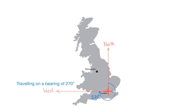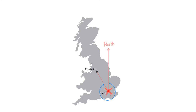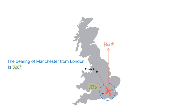The way bearings work is that we consider our starting point and work out how many degrees clockwise we need to turn from facing north until we are facing where we want to get to. If we were in London and wanted to face Manchester, the clockwise angle we would have to turn would be 328 degrees, so we say the bearing of Manchester from London is 328 degrees. Notice we could work out the angle of 32 degrees — that's 360 minus 328 — but that 32-degree angle is not the bearing.